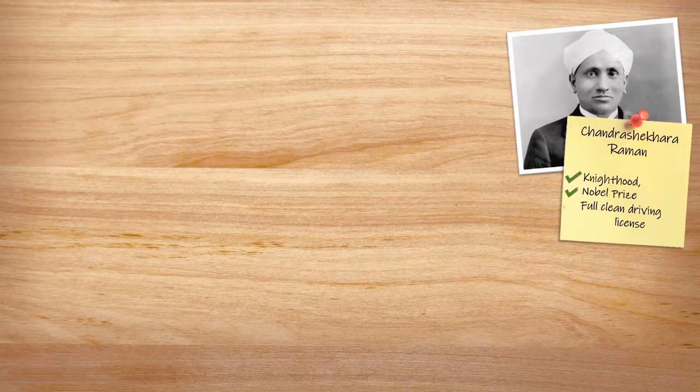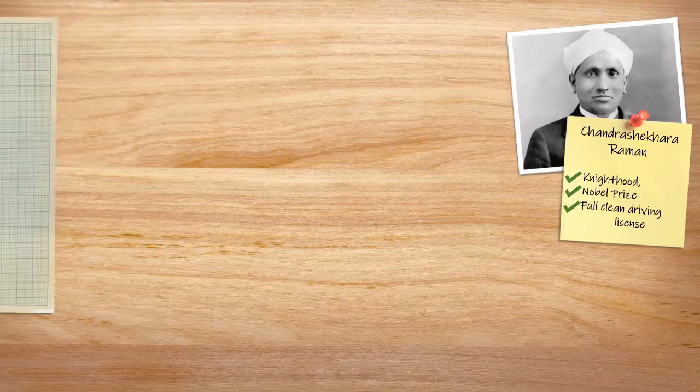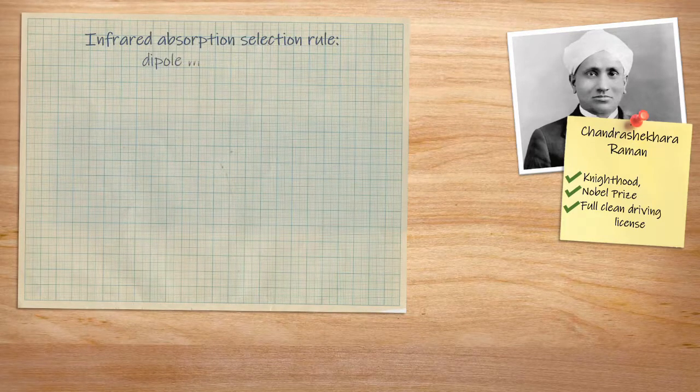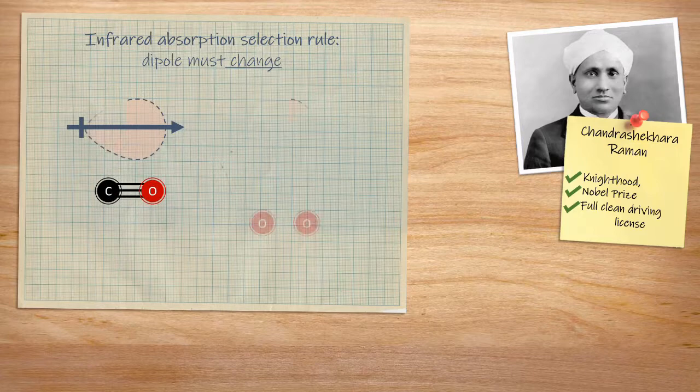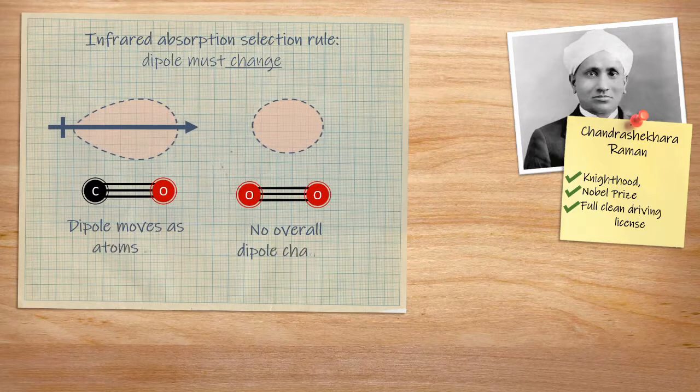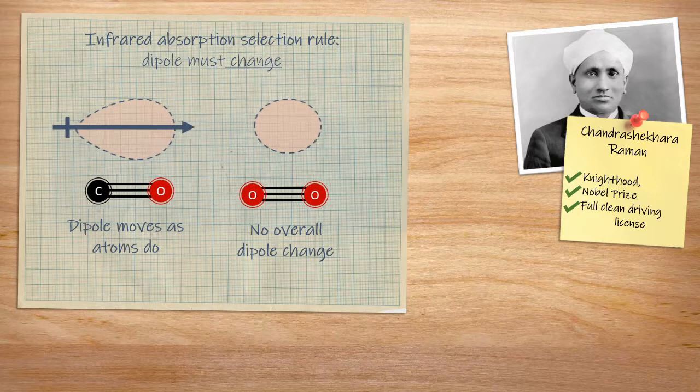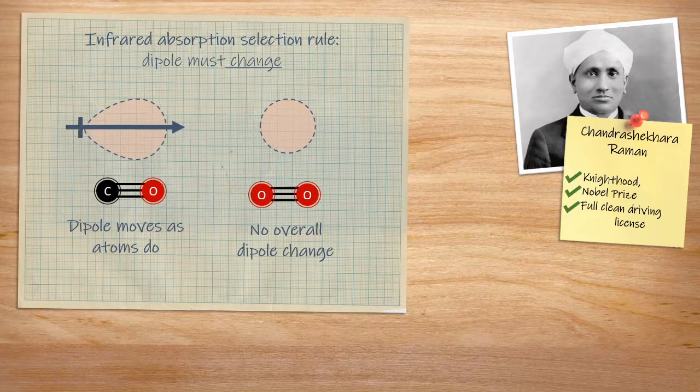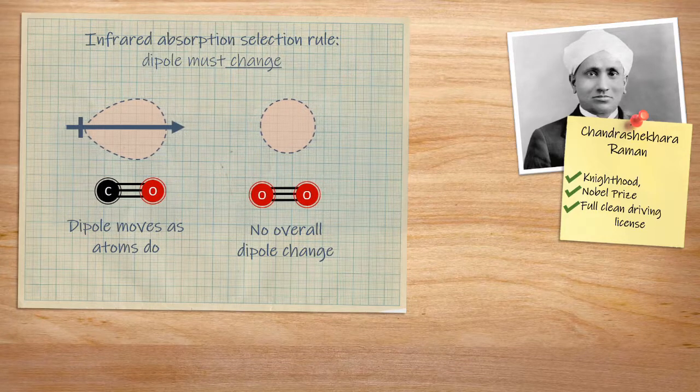Raman spectroscopy is named after Nobel Prize-winning Indian physicist Chandra Shekhara Raman. Recall that in absorption infrared spectroscopy, the dipole of the molecule must change during the vibration. This leaves some vibrations, and even some molecules, completely silent in IR spectroscopy. We just don't see a transition.